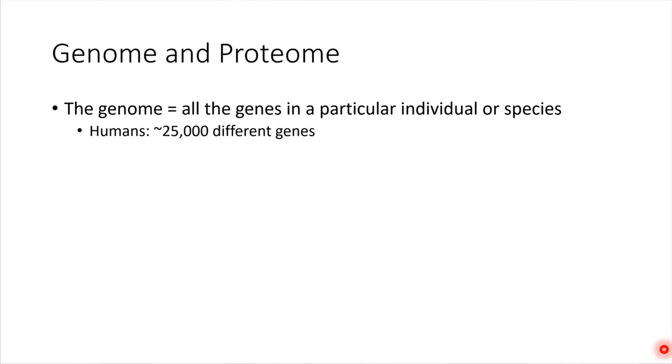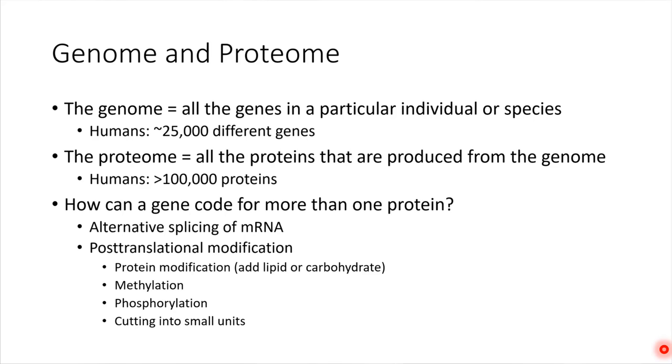However, something interesting comes up. If we look at the proteome, the complete set of all proteins that we can produce, we have more than 25,000 proteins. Believe it or not, we have more than 100,000 proteins in our bodies. So how is that possible? Well, it turns out that there are a lot of modifications that can be done in order to produce different varieties of proteins from these 25,000 genes.